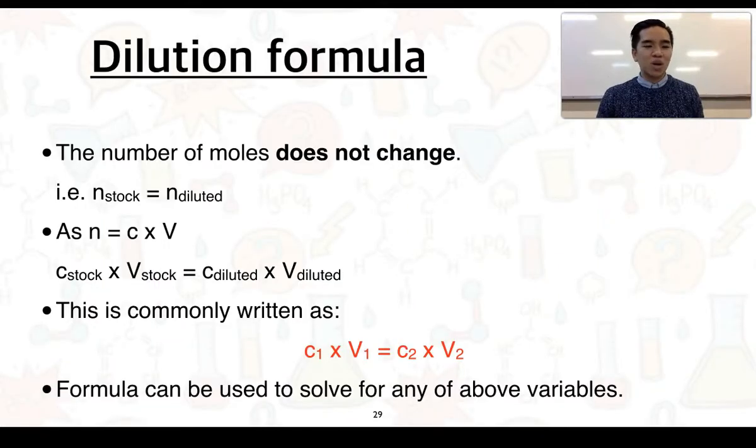What we have to understand is that when we transfer our stock solution into our diluted solution, the number of moles does not change. In other words, the number of moles of our stock solution is equal to the number of moles of our diluted solution. We know that the number of moles can be calculated by using this formula n = c × V.